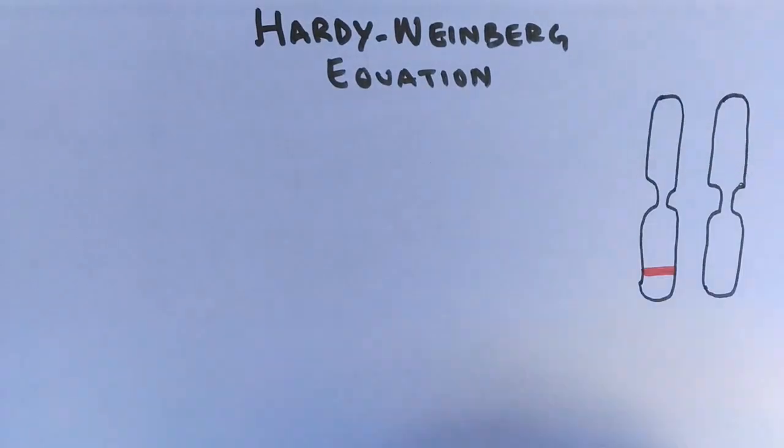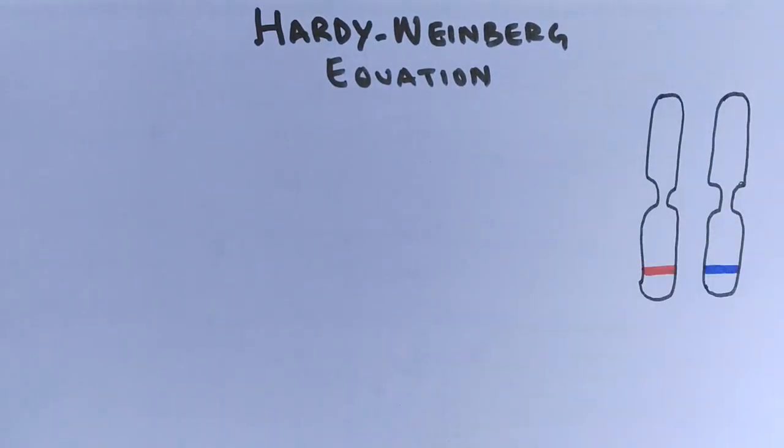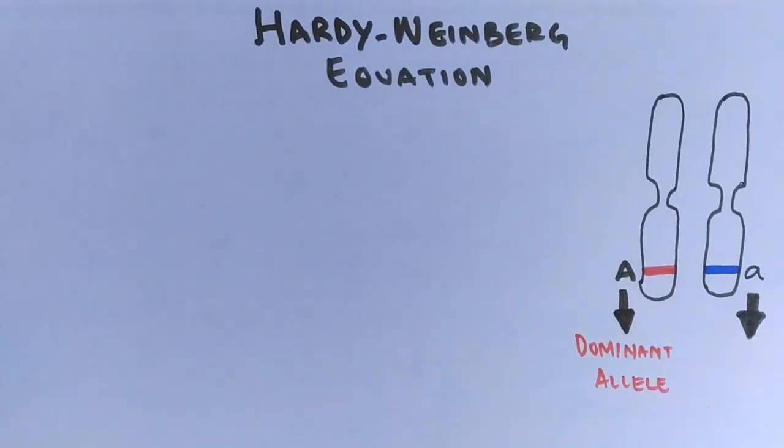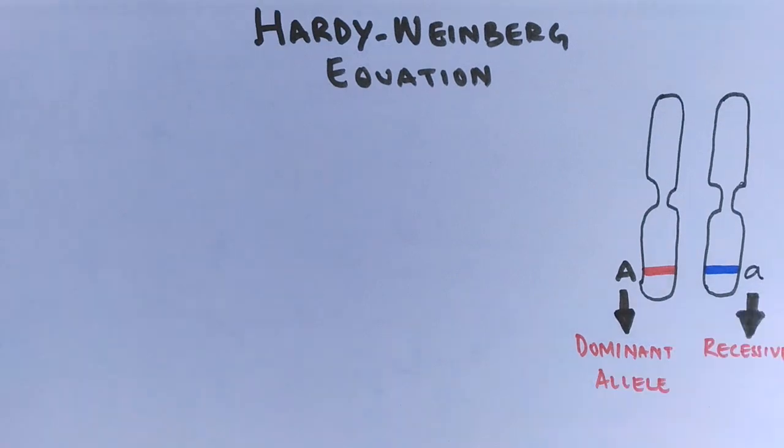To understand this equation we take a homologous pair of chromosomes on which two different alleles are present. Let's mark the first allele as letter A in uppercase which happens to be a dominant allele. The next allele is letter a in lowercase which happens to be a recessive allele.